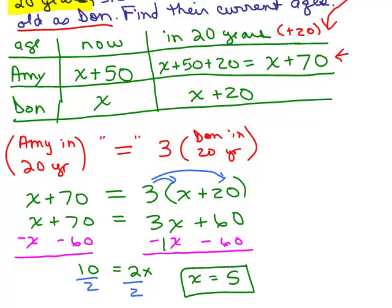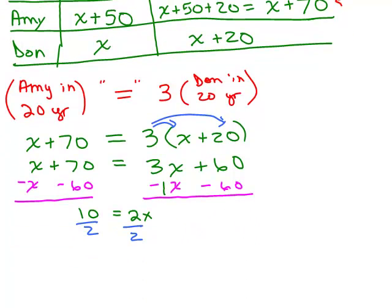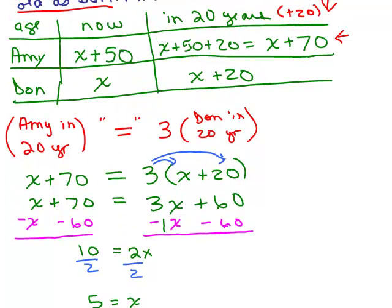So 5 equals X, which means X equals 5. Now what does X stand for? We defined it as Don's age. So now we know that Don is 5. And what would Amy be now? It says X plus 50, so that would be 5 plus 50. Amy is 55.